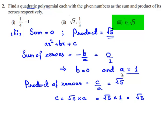So finally, we found out the values of a, b, and c. That is a is equal to 1, b is equal to 0, and c is equal to root 5.